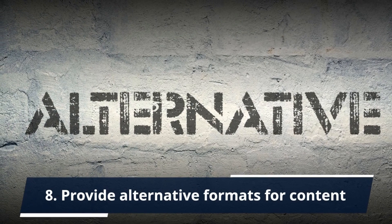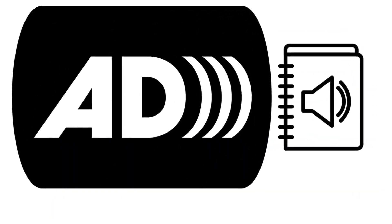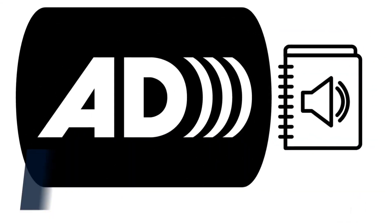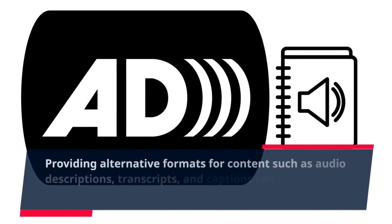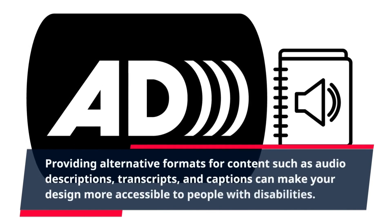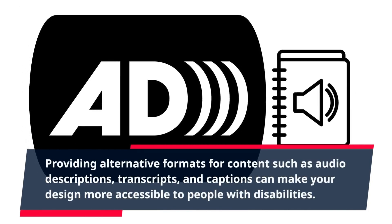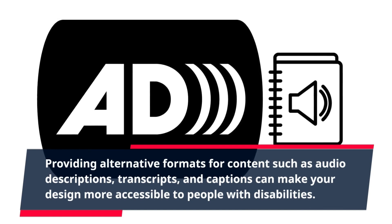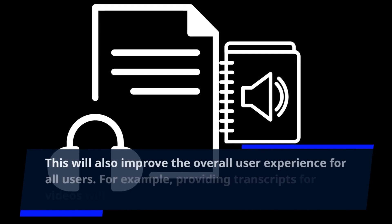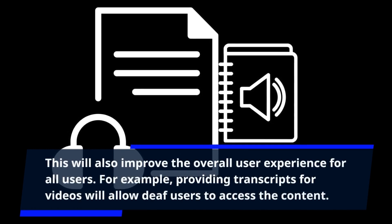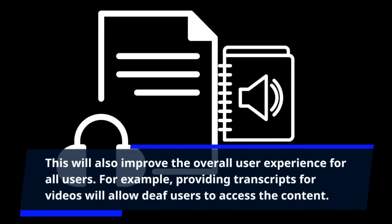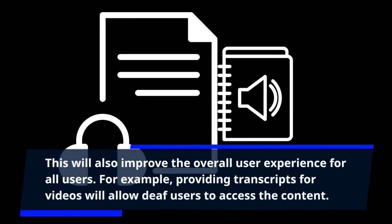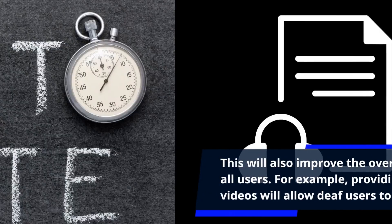Tip 8: Provide Alternative Formats for Content. Providing alternative formats for content such as audio descriptions, transcripts, and captions can make your design more accessible to people with disabilities. This will also improve the overall user experience for all users. For example, providing transcripts for videos will allow deaf users to access the content.